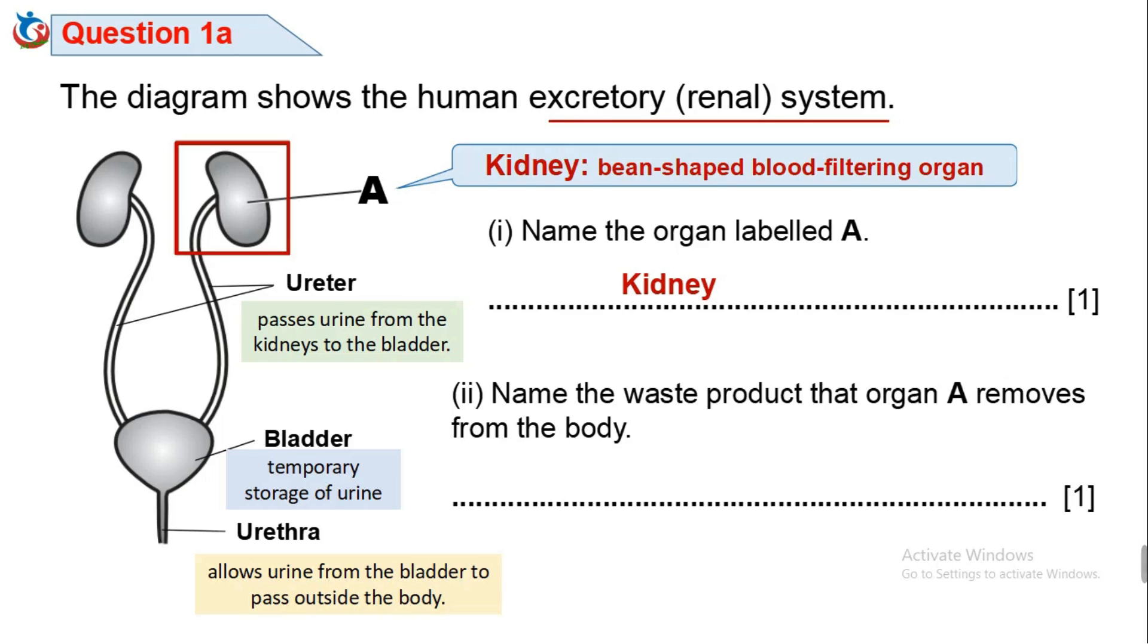Question 1A2. Name the waste product that organ A removes from the body. Kidney removes urea, uric acid and ammonia.